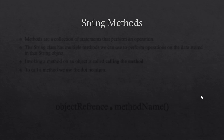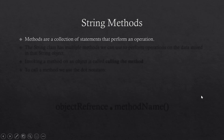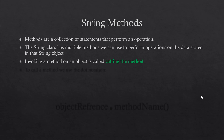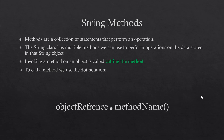In the previous video we explained that methods are basically just a collection of statements that perform a specific operation on the data stored in an object. The string class has multiple methods we can use to perform operations on text stored in a string object. To invoke a method we call it on the object using dot notation — the object reference, then dot, followed by the method name.